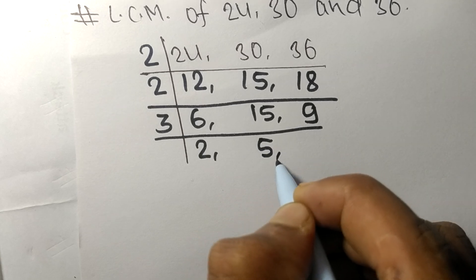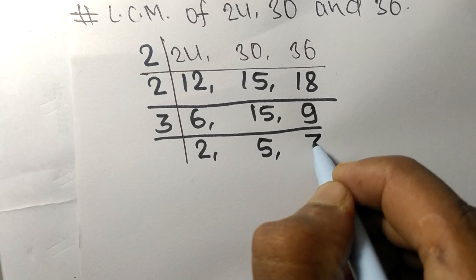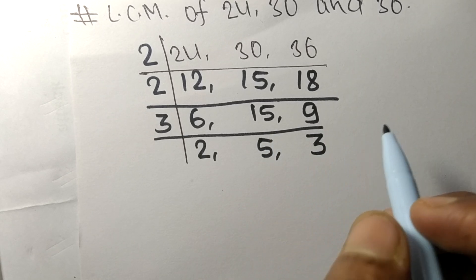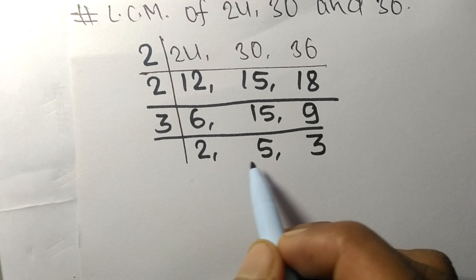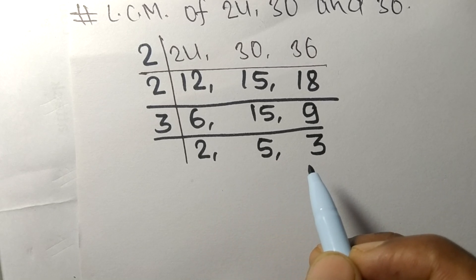Now these numbers 2, 5, and 3 are not divisible by the same number. Therefore, the LCM equals 2 times 2 times 3 from this side.